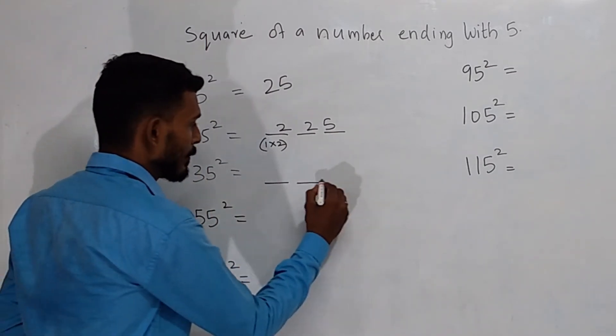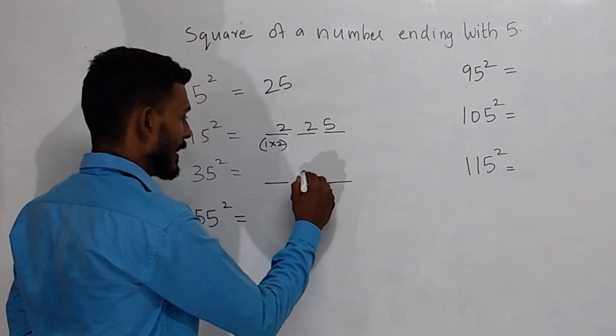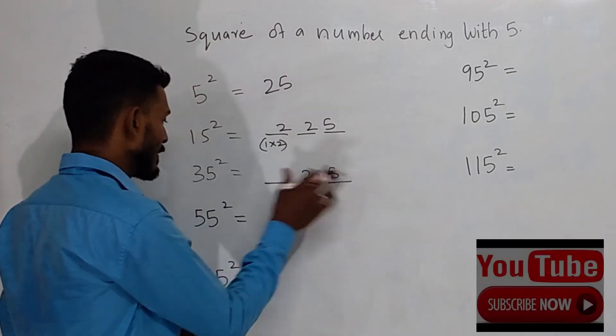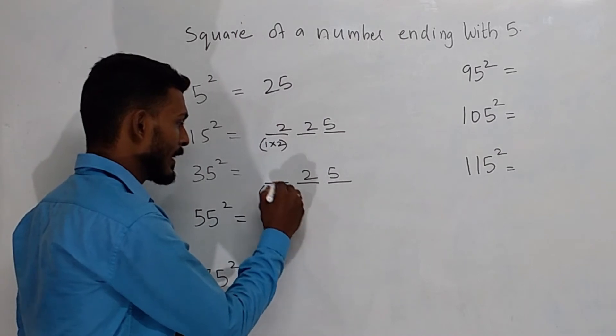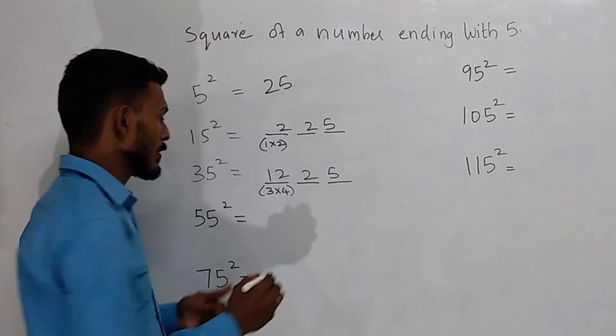Then for the next thing, make 3 dashes. Write 25 in the end, then 2, which is multiplied by the next number, that is 3, that is, we will be getting 12, 625.